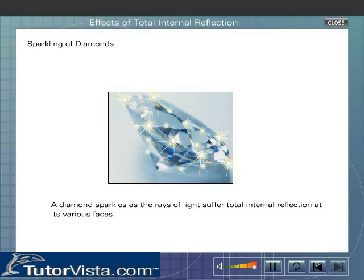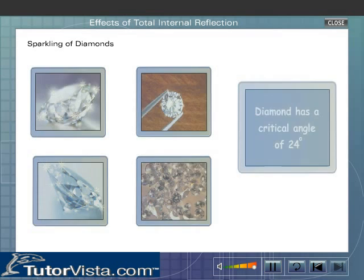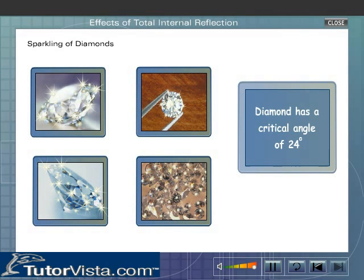A diamond sparkles as the rays of light suffer total internal reflection at its various faces. Let us see how this happens. The critical angle for the ray of light travelling from diamond to air is very low, about 24 degrees.